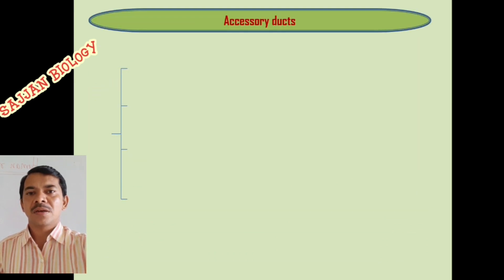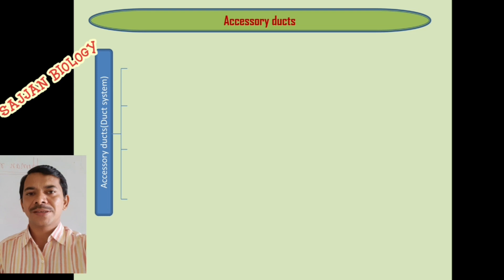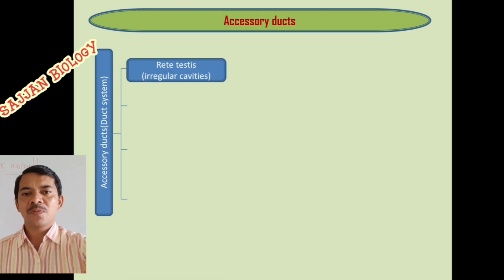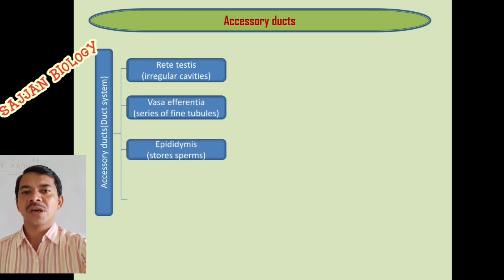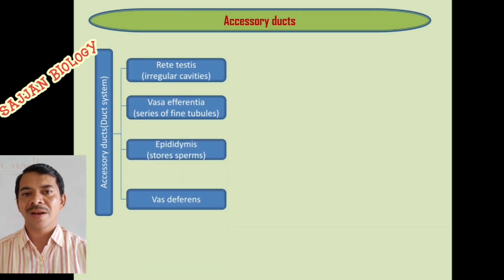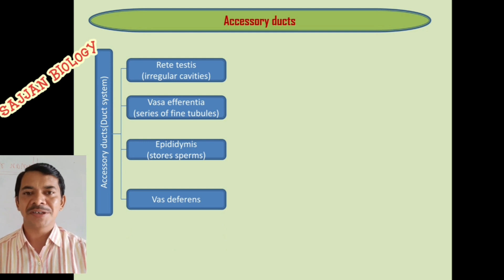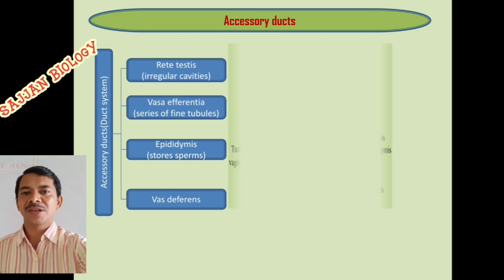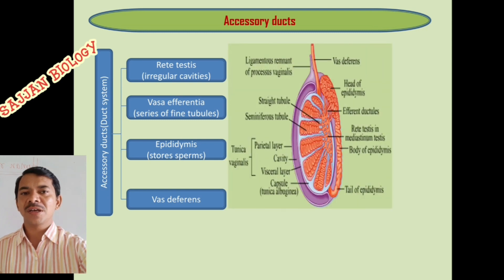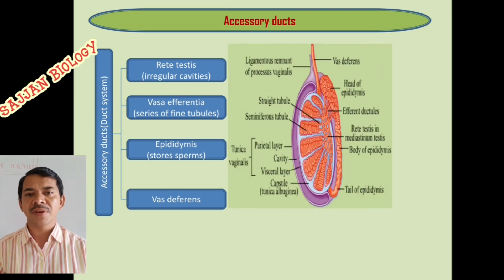Here we are studying the accessory ducts. The accessory ducts are: rete testis, vas efferentia, epididymis, and vas deferens. The rete testis is nothing but a network of seminiferous tubules.